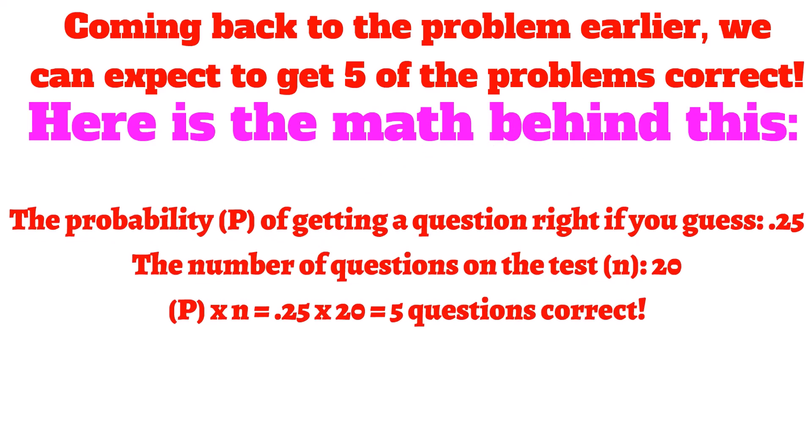The probability, p, of getting a question right if we guess is 0.25. The number of questions on the test, which is represented by n, is 20. Multiplying these two numbers, p times n, which is equal to 0.25 times 20, we get 5 questions correct.